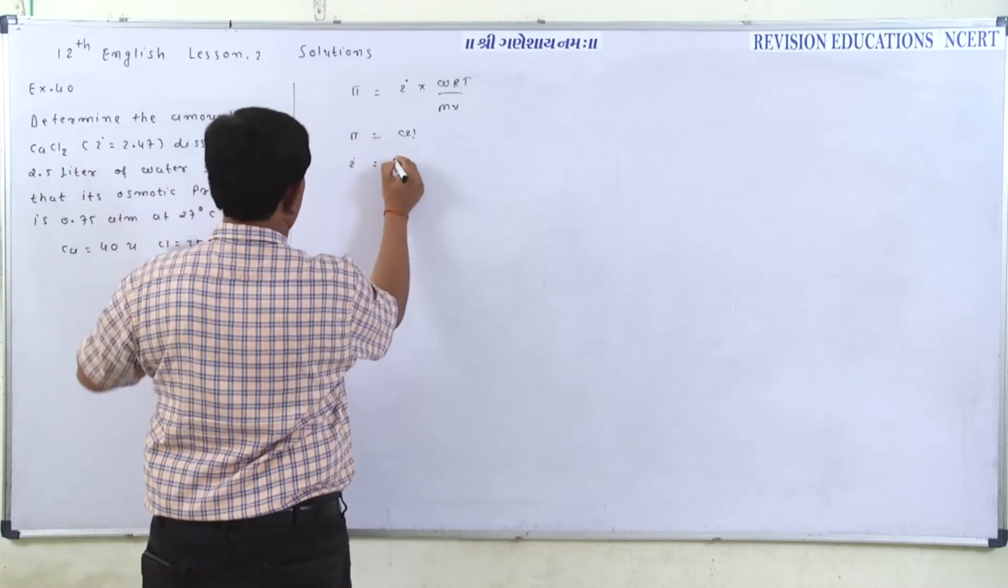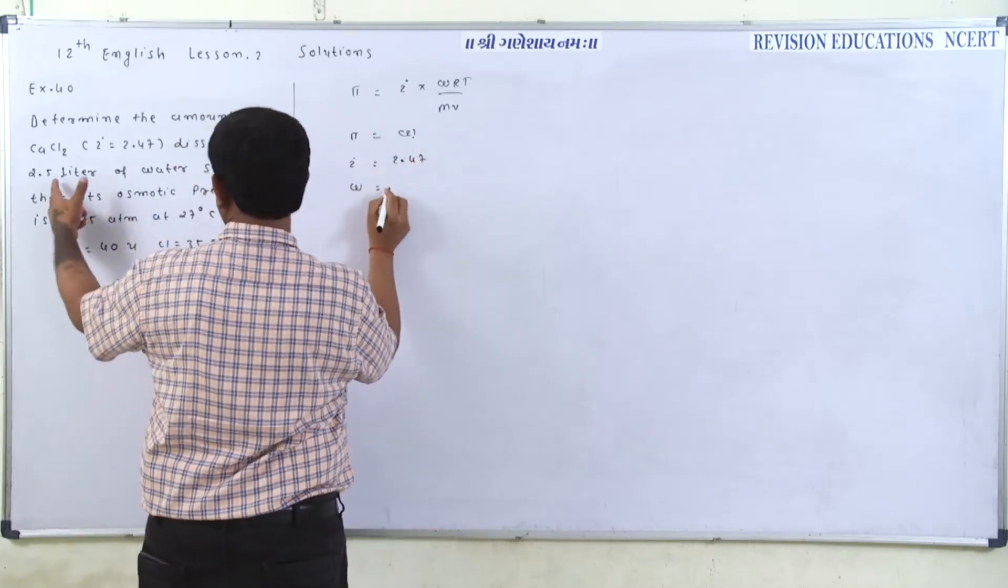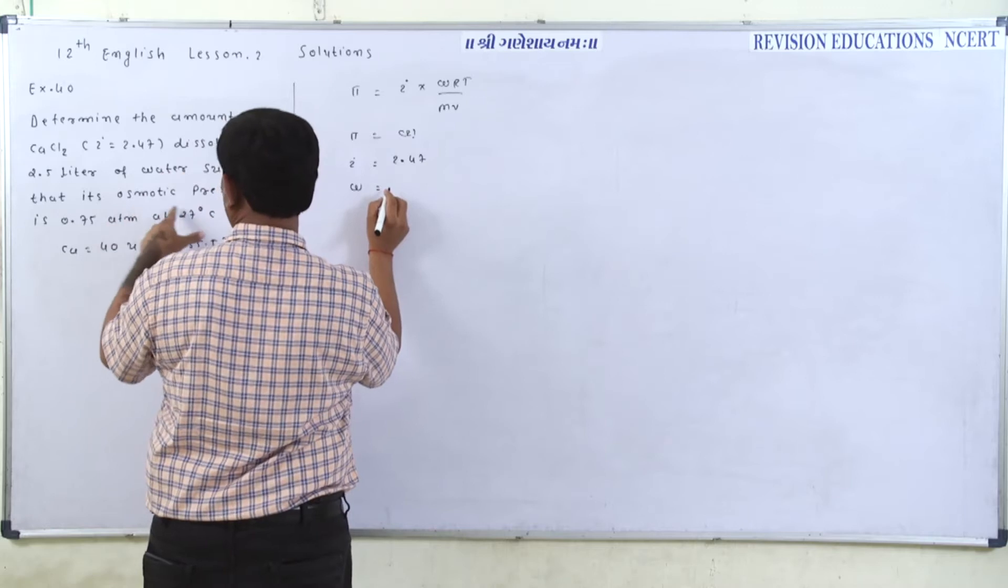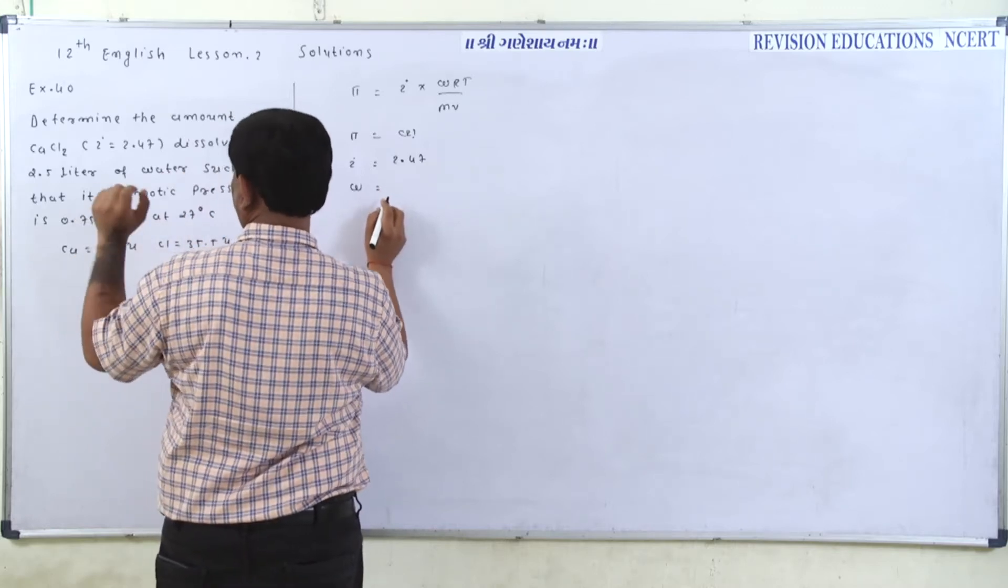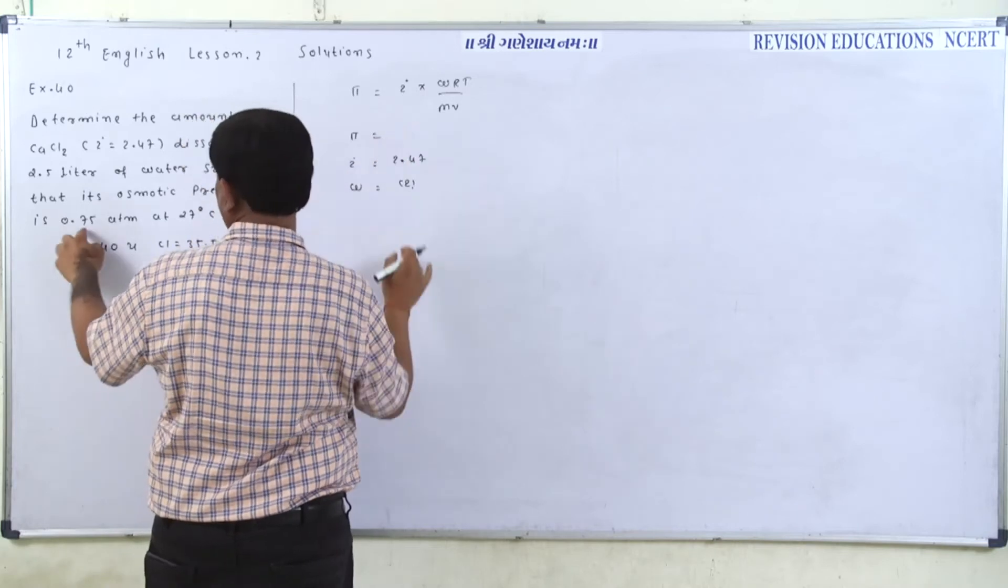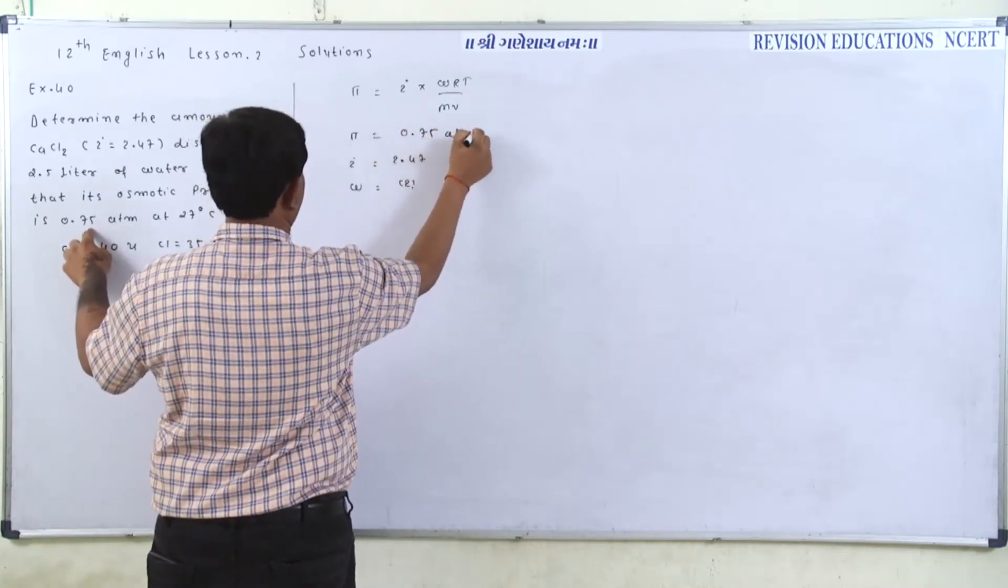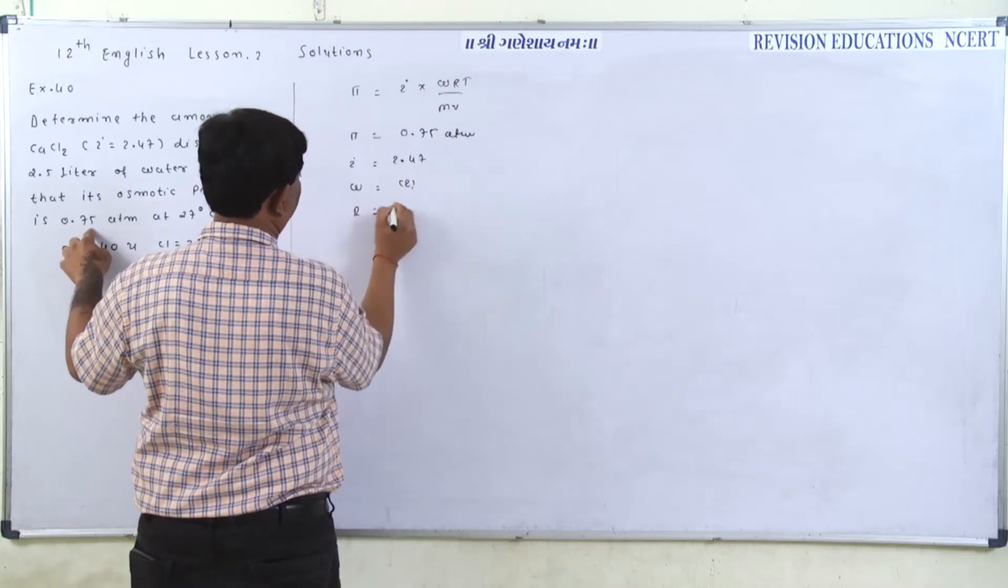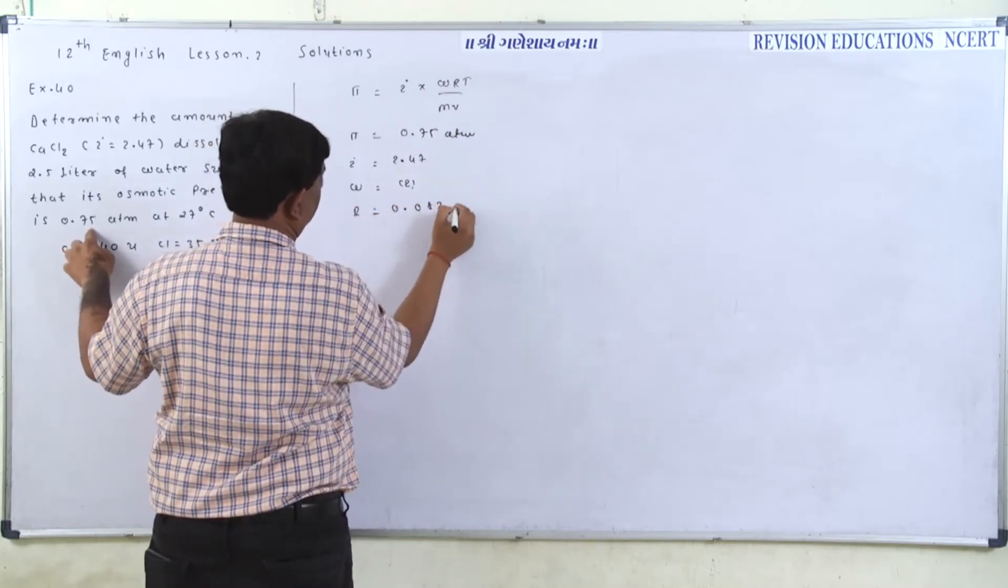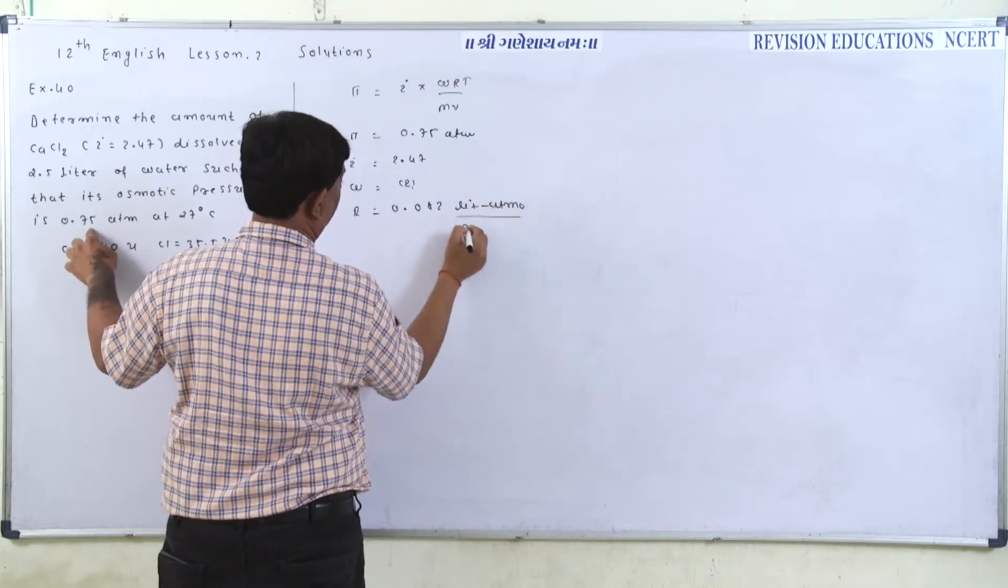i is given to us as 2.47. W mass, what is the mass? That is what we need to determine. The volume given is 2.5 liters. Osmotic pressure pi is 0.75 atmosphere. R is 0.082 liter atmosphere per mole kelvin.